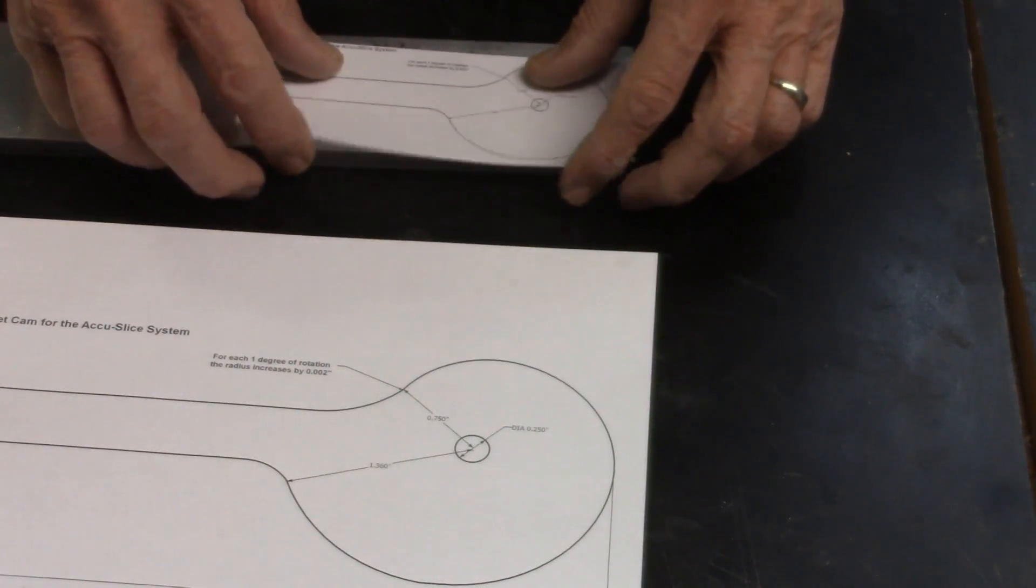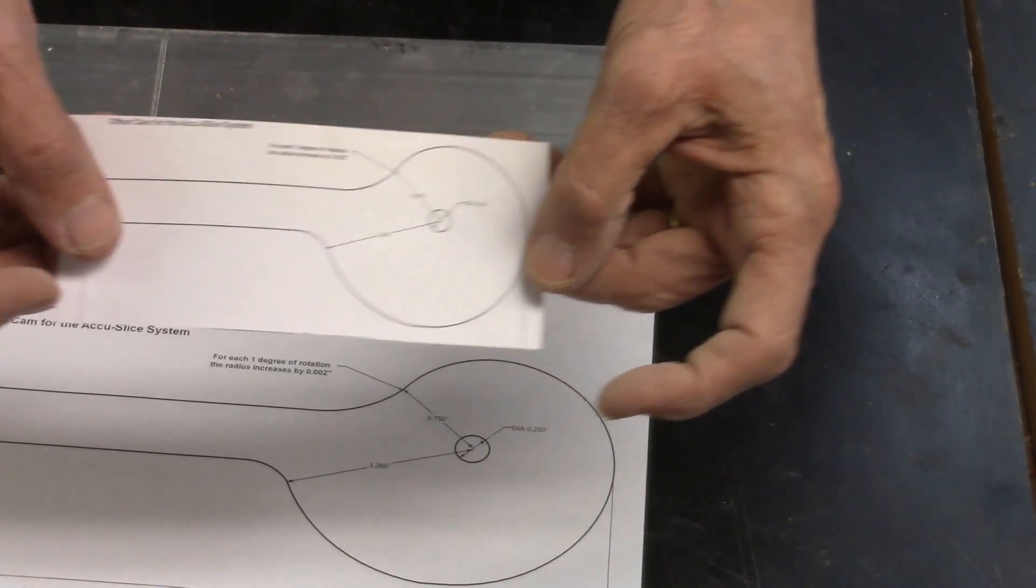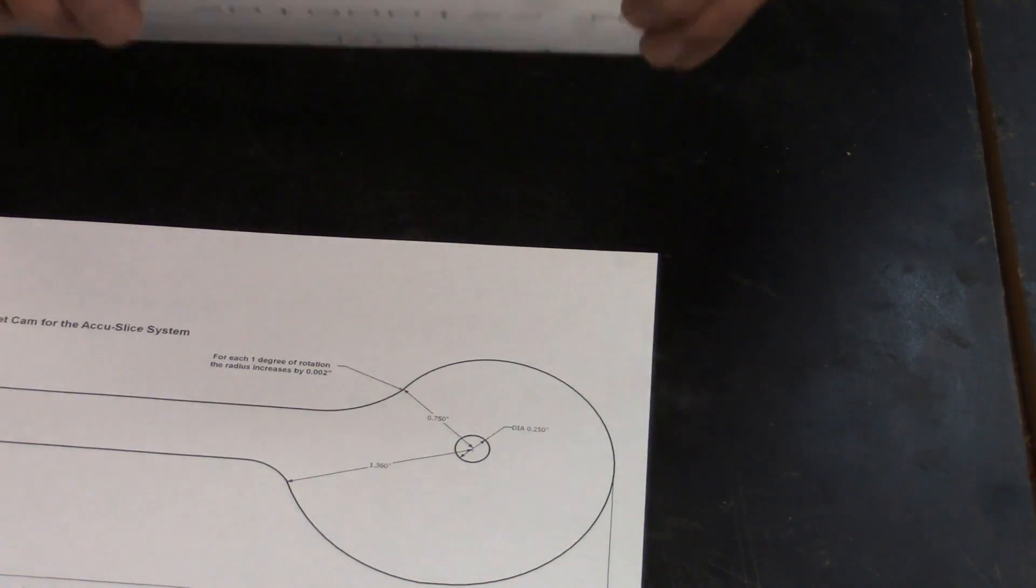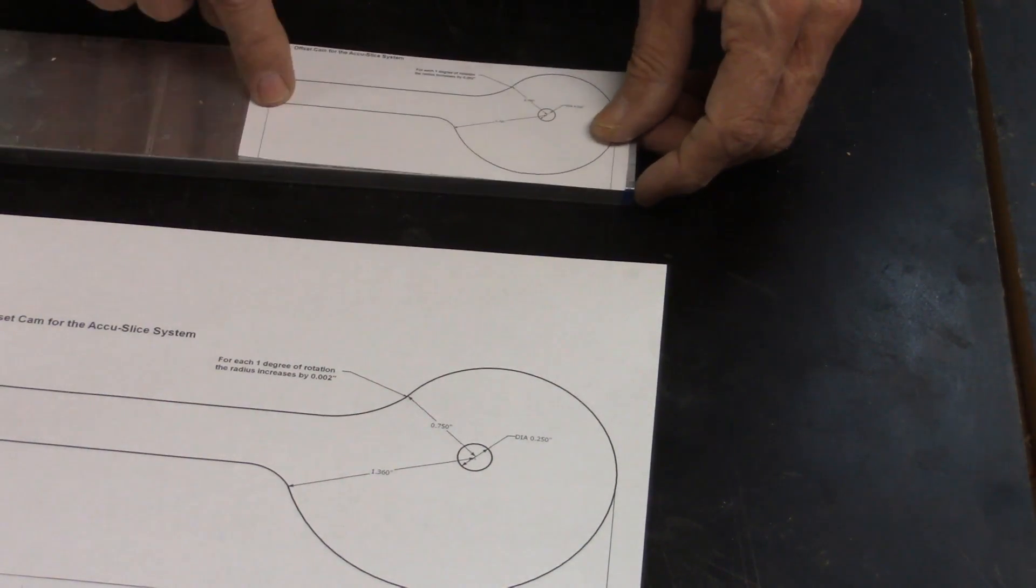So I made a scale drawing to the exact size I want for my piece. And I'm going to glue this to my piece of aluminum block, which is three-quarter inch thick. And then I'll cut it out.